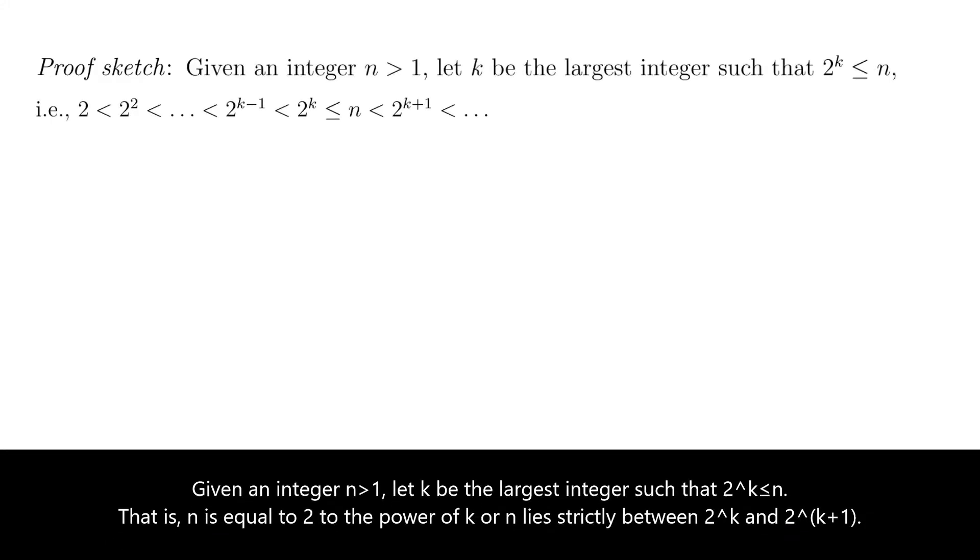Given an integer n more than 1, let k be the largest integer such that 2 to the power of k is less than or equal to n. That is, n is equal to 2 to the power of k or n lies strictly between 2 to the power of k and 2 to the power of k plus 1.